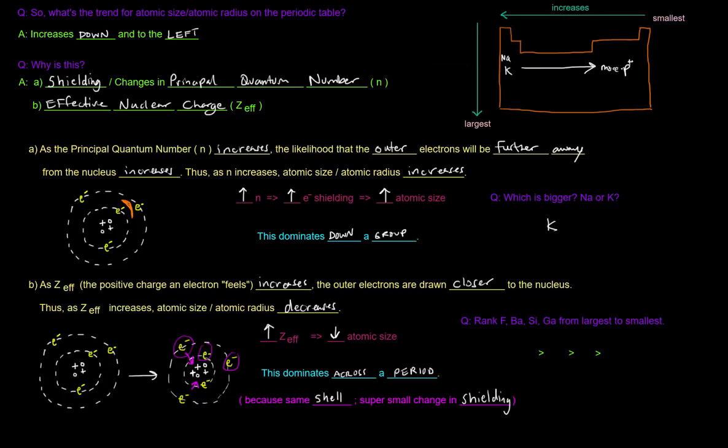Because you're not adding an entirely new shell. But when you're going down a group, you're going from energy level number one, two, three, four, five, six, you're adding a new shell. So shielding dominates going down a group. But across a group, if you're in the same shell, it's the effective nuclear charge that you'll be considering.